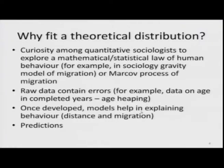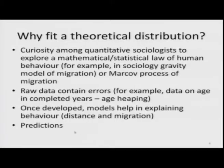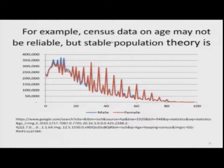Once developed, models can help in explaining behavior. For instance, in the case of the gravity model you can explain why the number of migrants to distant places is less and to nearby places is more, and the model can also be used for predictions. For example, census data on age may not be reliable — it suffers from fluctuations due to age heaping — and you may want to fit a stable population model.